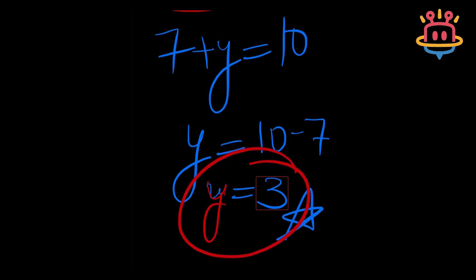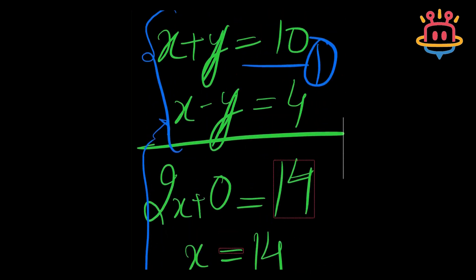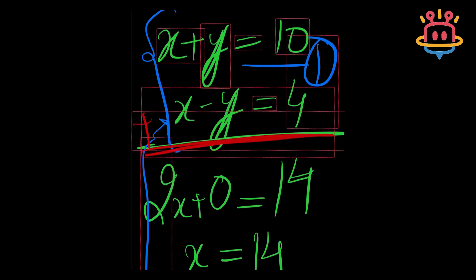Remember: just add to eliminate one variable, then substitute the new variable's value into the other equation to get the second variable. No long calculations — just quick, easy steps. This actually works for any simultaneous equations with additions and subtractions. So try this super fun trick, and I will see you next time. Bye!